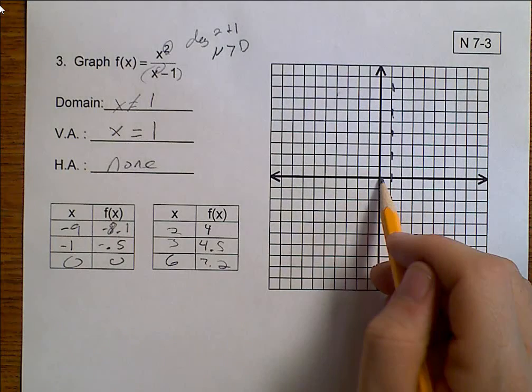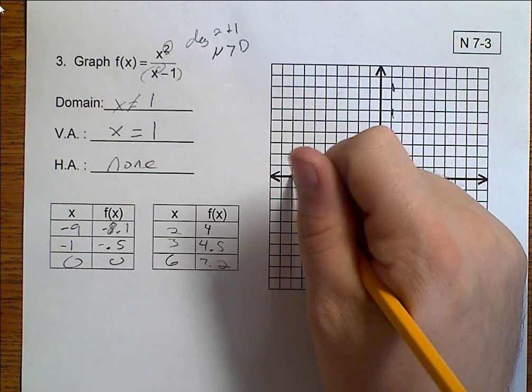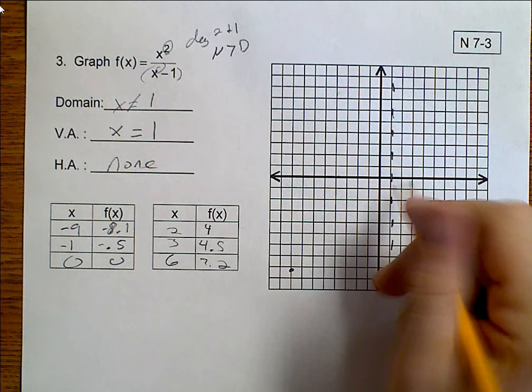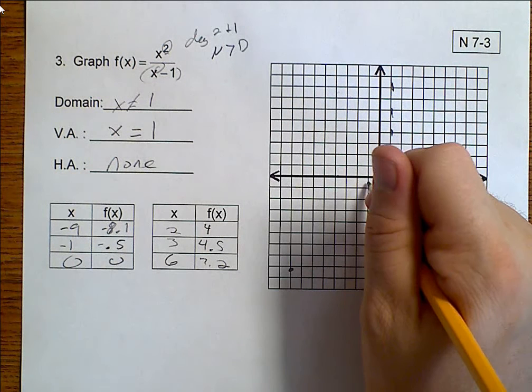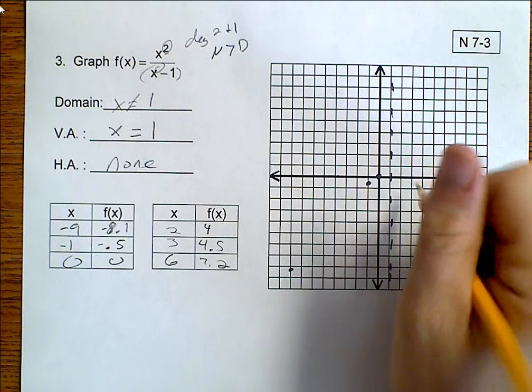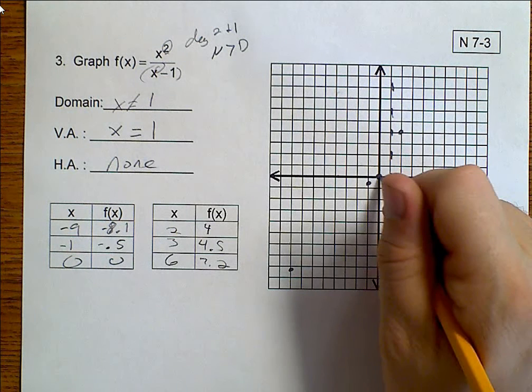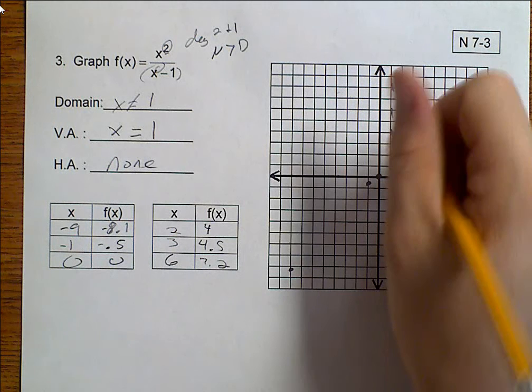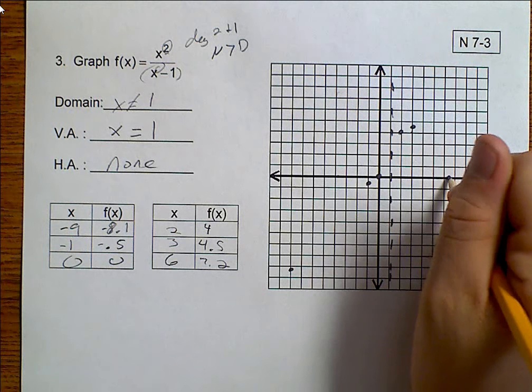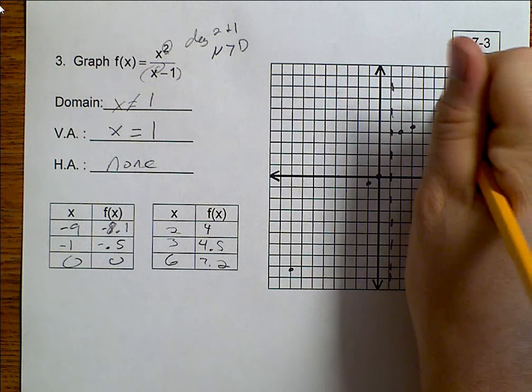Plot your points. At negative 9, 8.1. Negative 1, negative 0.5. 0, 0. 2, 4. 3, 4.5. And 6, 7.2.